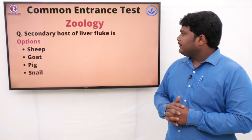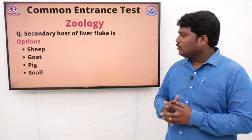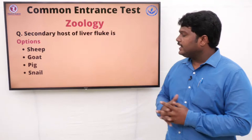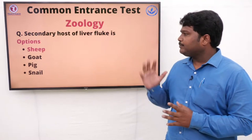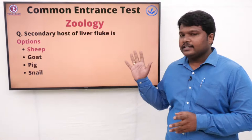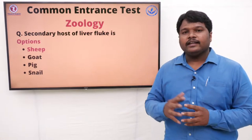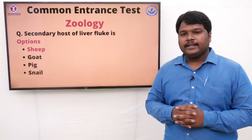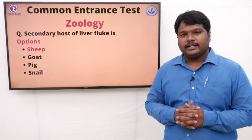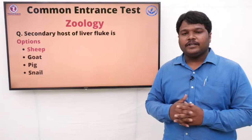Question 32: Secondary host of liver fluke is. Options: A) Sheep, B) Goat, C) Pig, D) Snail. The right answer is sheep. Secondary host of liver fluke is sheep. Whatever meat you cook should be properly cooked; otherwise these types of organisms will enter our digestive system and lead to hookworm infestation problems.